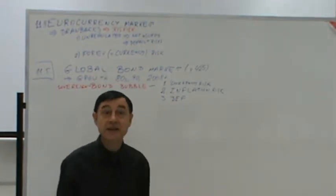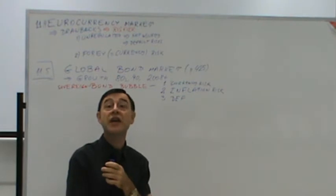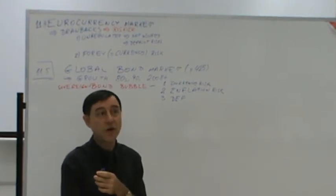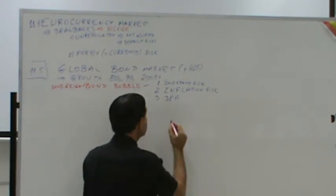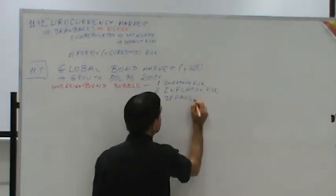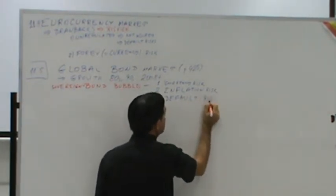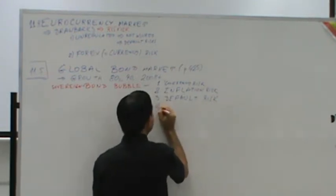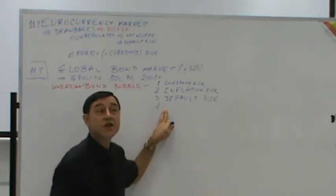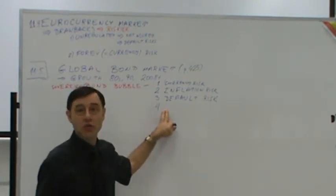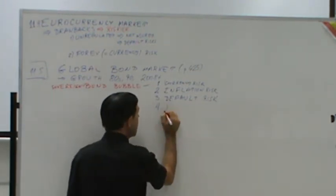You'd be expecting that sooner or later the Greek government will default, and later on the Spanish, Portuguese, Italian, so it's default risk. And here is the worst one, the worst one is called interest rate risk.